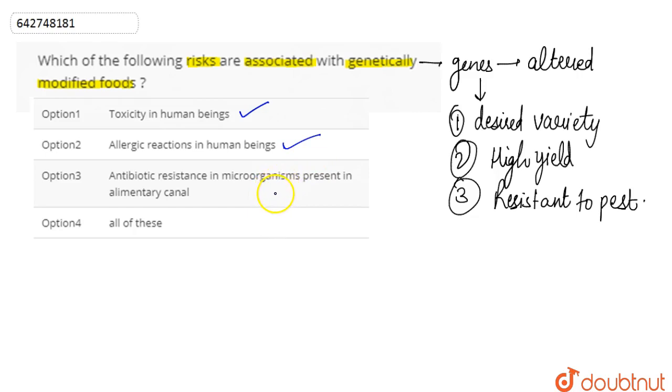So in the human alimentary canal, the microorganisms have certain antibiotic resistances. So this is even correct. We can say that all of the options are the risks that are associated with genetically modified food. So option four is our correct answer - that's all of these.